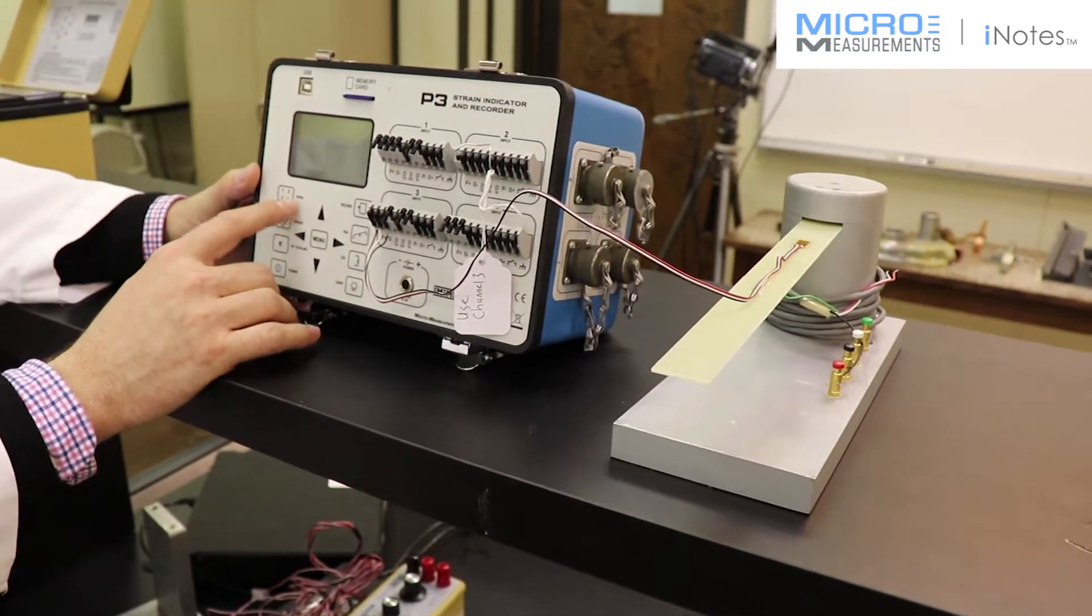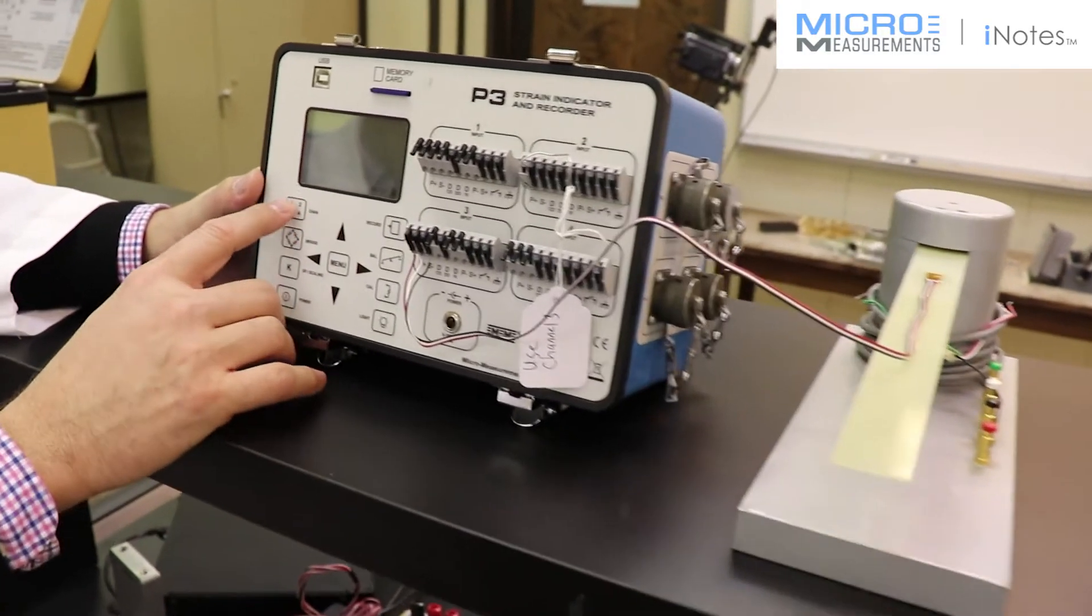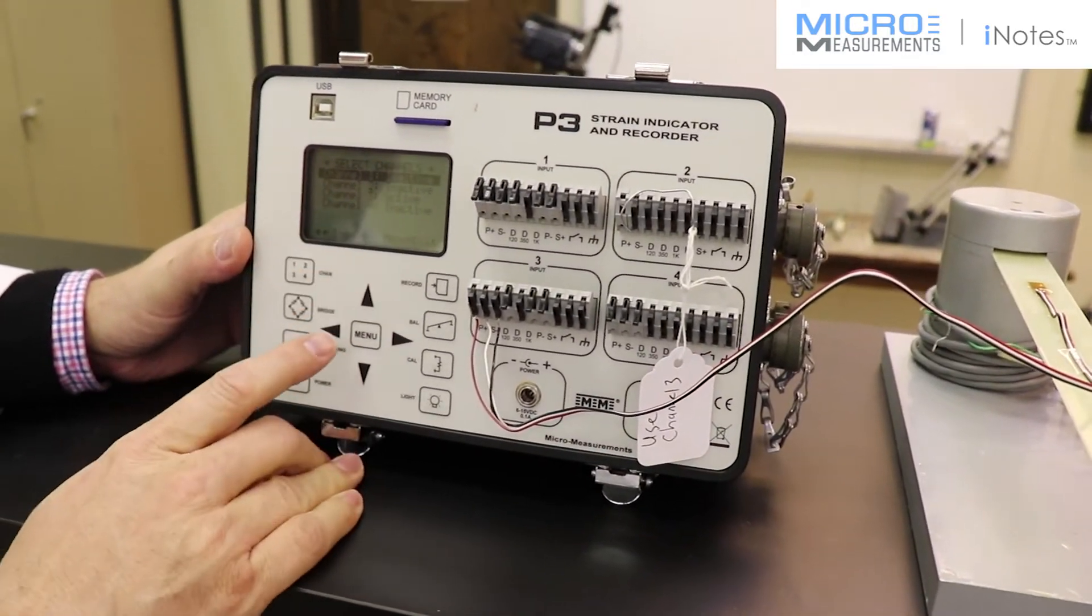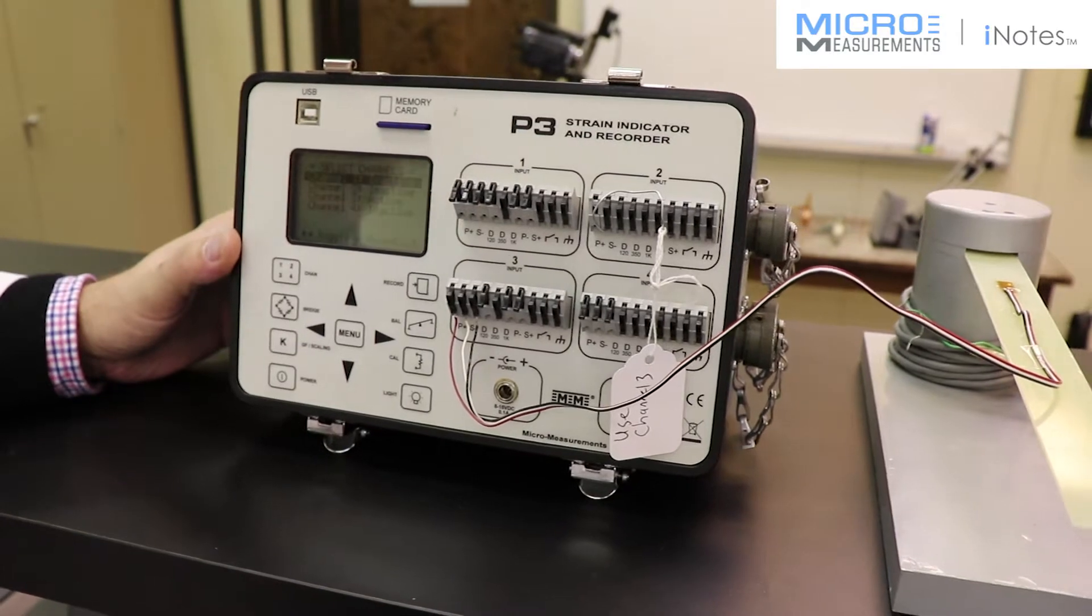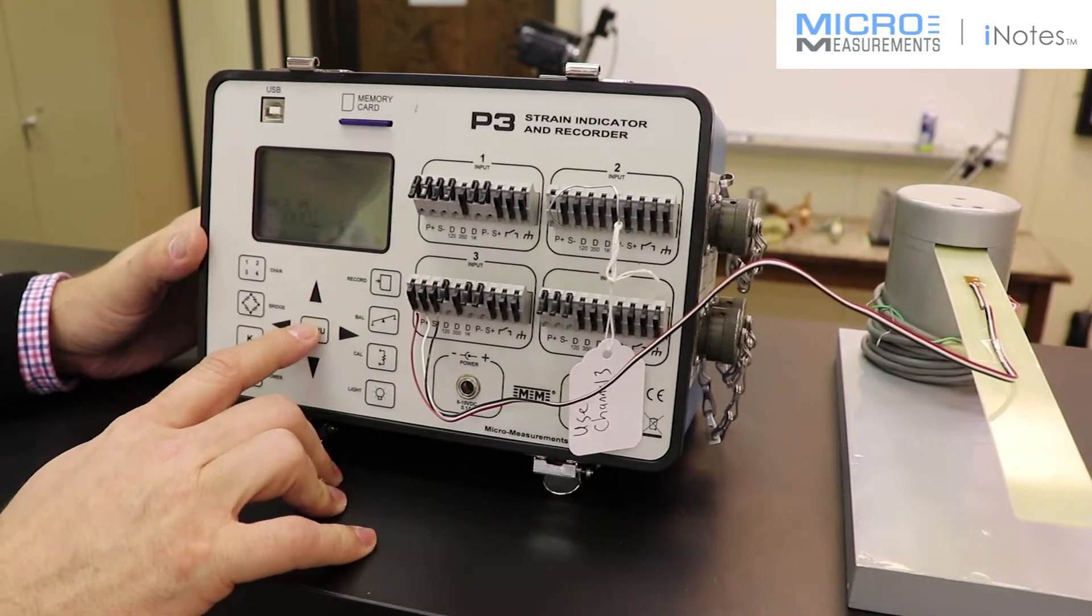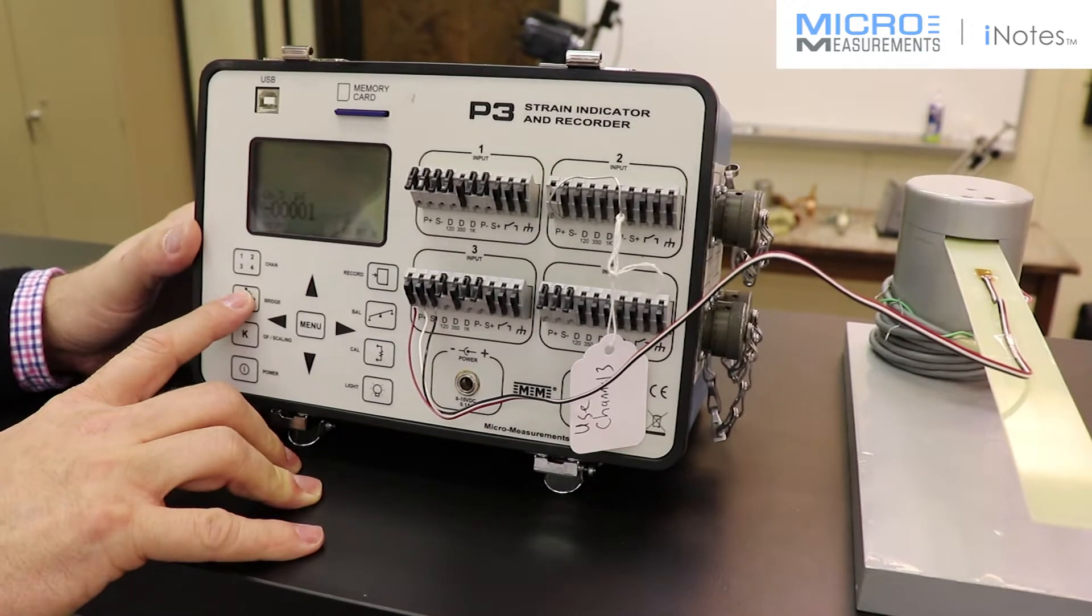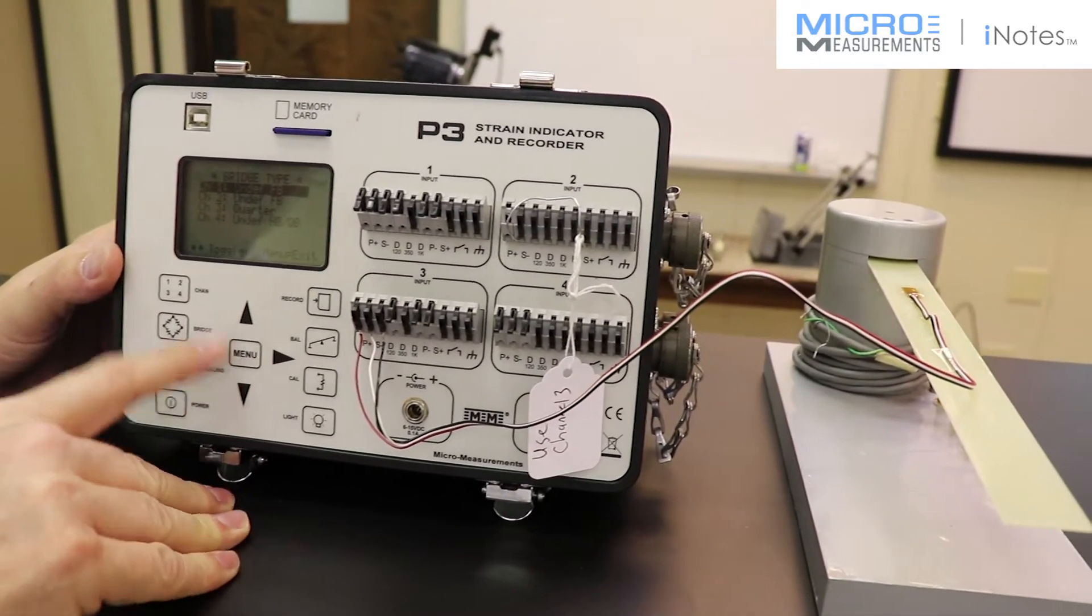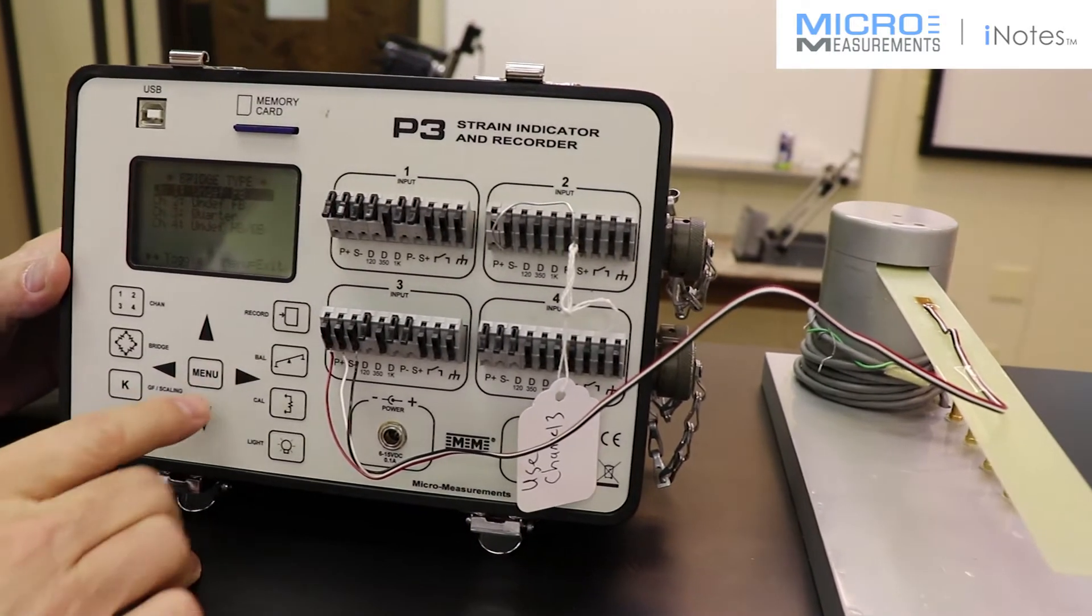Going through the P3 setup quickly, channel 3 is active while the other three channels are inactive because we're not using them. I'll press menu to get back out. Setting the bridge type - channel 3 is set to a quarter bridge, which is what we have connected.